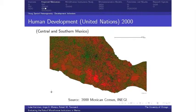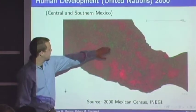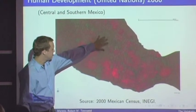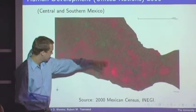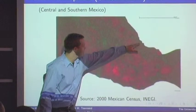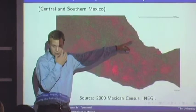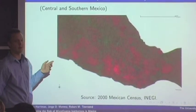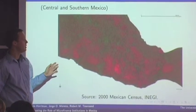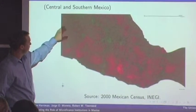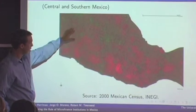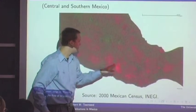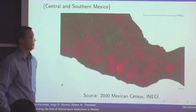Here's a closer look, zoomed in on central and southern Mexico. Urban areas include the Mexico City area, the city of Puebla, Acapulco, and Veracruz — all fairly large cities. Mexico is a fairly urbanized country, and in those urban areas, access to services, financial deepening, and income are all quite a bit higher. This contrasts with primarily rural mountainous areas, which are definitely ripe for microfinance interventions.